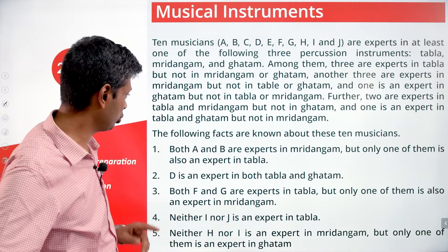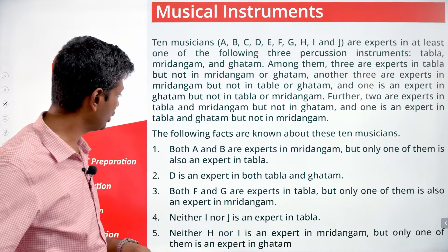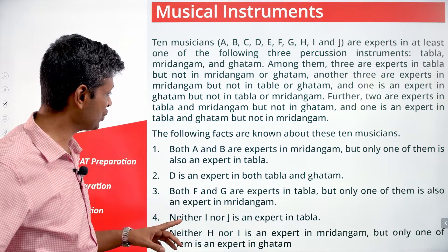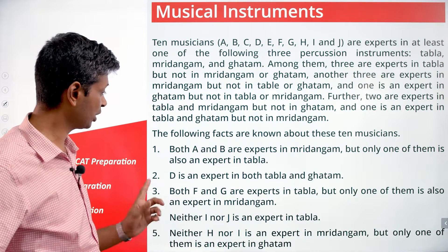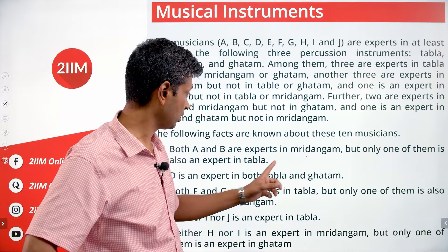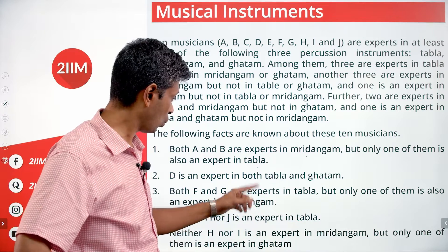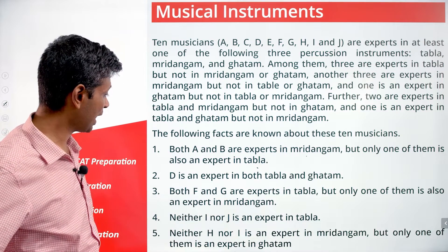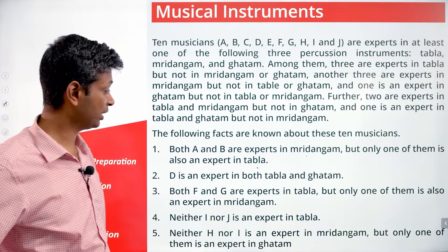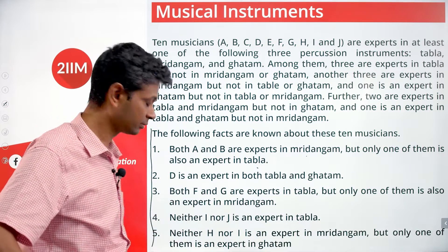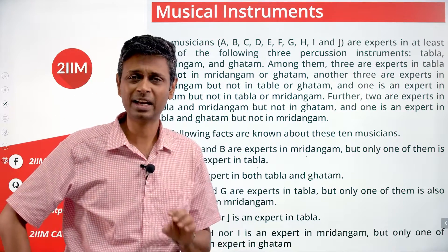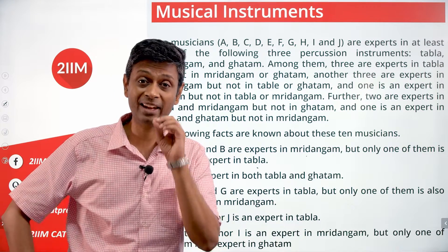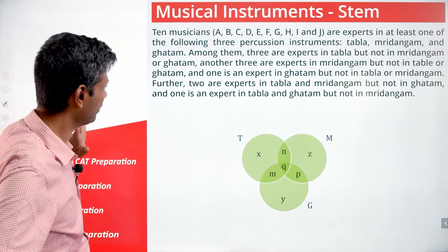The following facts are known about these ten musicians. We'll approach this like a classic Venn diagram set — instead of just dealing with numbers in intersections, we're going to place the actual musician names inside the regions. Let's first put the numbers in, then we'll place the elements.